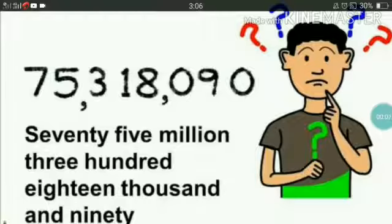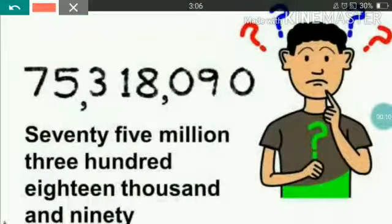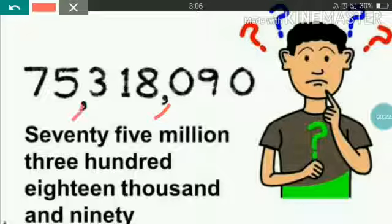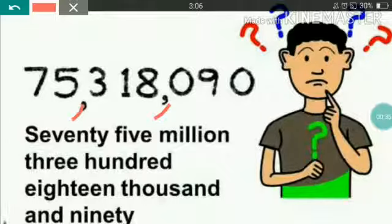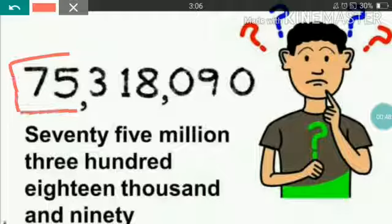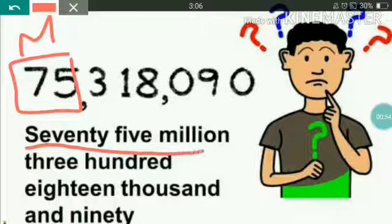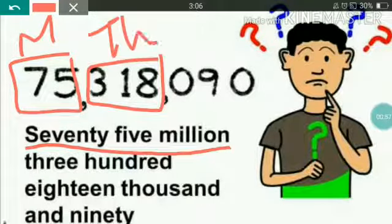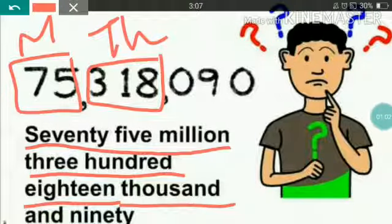One more example: 75,318,090. How do we place commas in the international number system? We place the first comma after hundreds, then after thousands, then after millions. Since the millions part has only two digits and nothing before it, we don't place an extra comma there. So we can write: 75 million, 318 thousand, and 90.